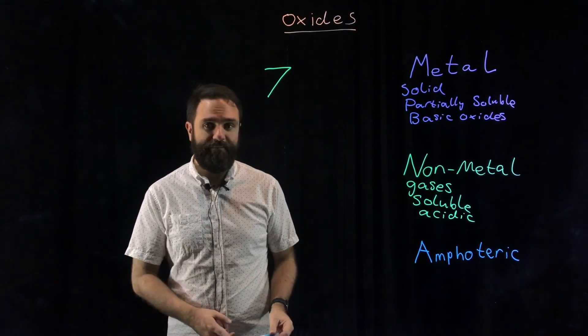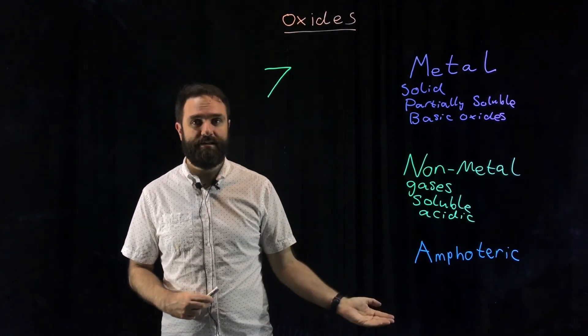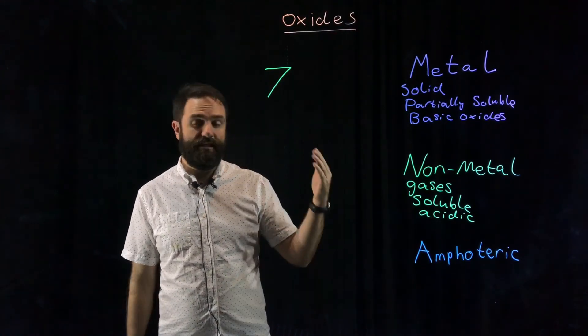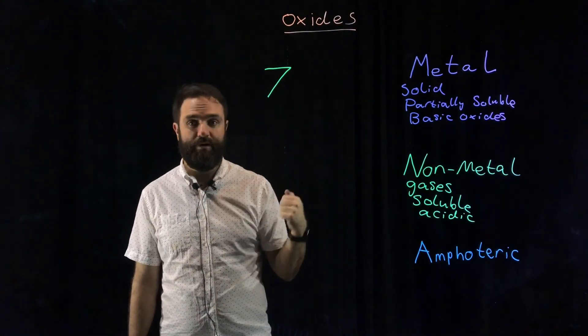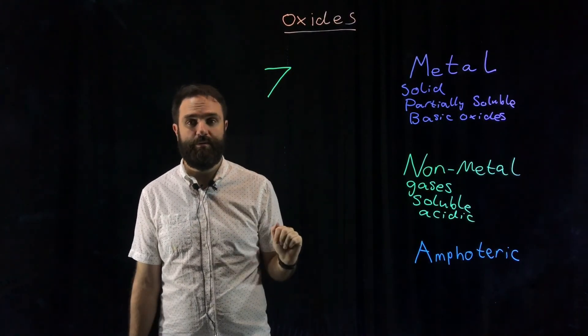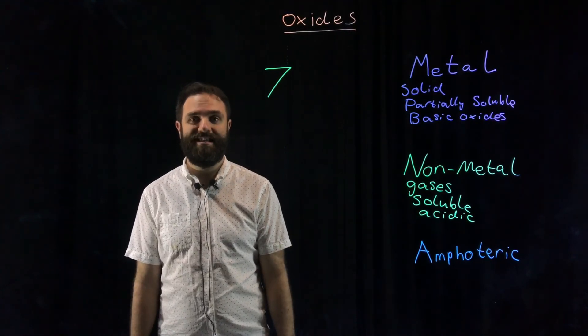An amphoteric substance is something that will neutralize both an acid and a base. So we can classify all these substances in terms of pH as: basic (reacts with acid), acidic (reacts with bases), neutral (doesn't react with acids or bases), and amphoteric (which will neutralize both an acid and a base).